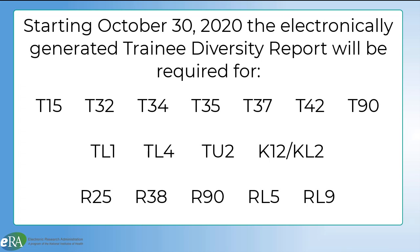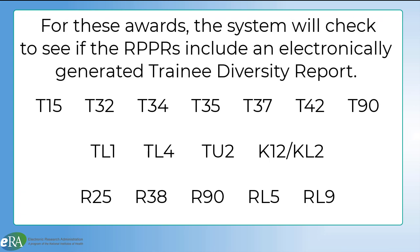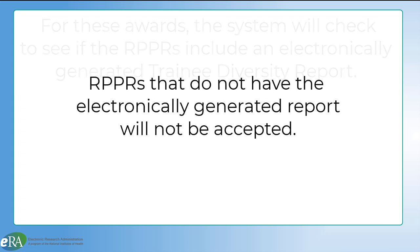The automated report is required for activity codes shown here. For these awards that generally require appointments through Xtrain, the system will check whether the RPPRs include an electronically generated Trainee Diversity Report. RPPRs that do not have the electronically generated report will not be accepted.